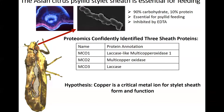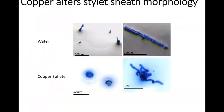I wanted to know if copper could have an effect on the morphology of the sheath, and so I allowed psyllids to feed on artificial diets with and without copper. In the water-containing diet, you'll see that the sheaths are linear and they look similar to the electron micrograph I showed you. But with copper, the sheaths are dilated and they have a higher incidence of this multi-branching phenotype. You could imagine that this branching phenotype could allow the stylet to access multiple phloem cells at the same time or subsequently.